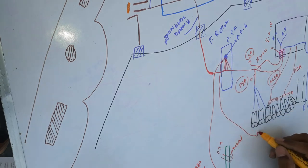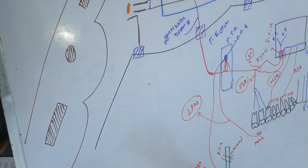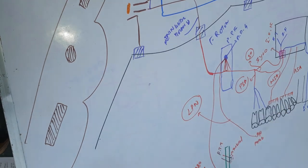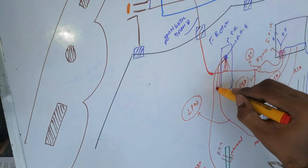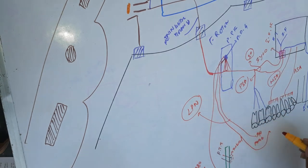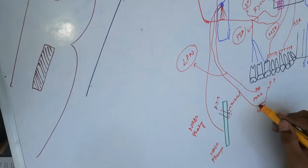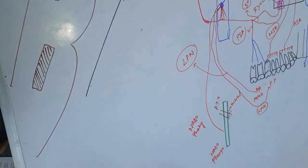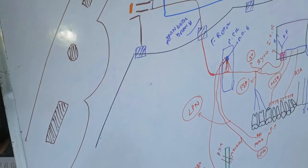Another branch from the ganglion goes and supplies the soft palate — I call this the lesser palatine nerve. Accompanying it is the greater palatine nerve, which runs along with the lesser palatine nerve and supplies the posterior aspect of the hard palate. So the lesser palatine supplies the soft palate and the greater palatine supplies the posterior hard palate.